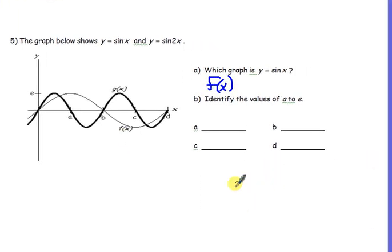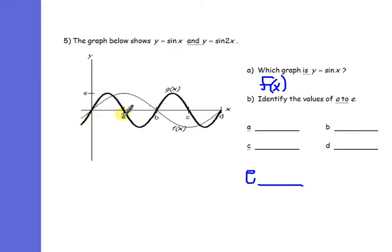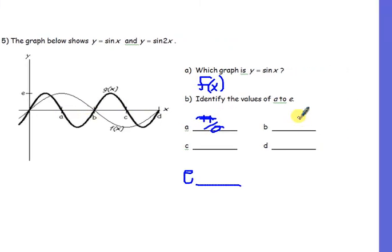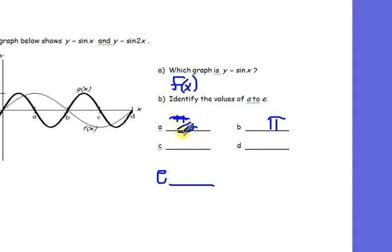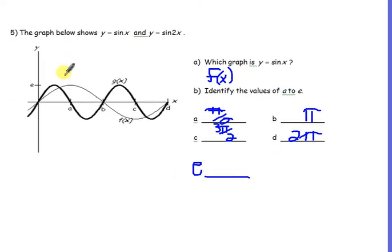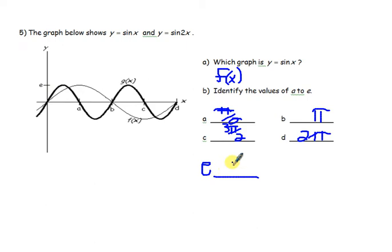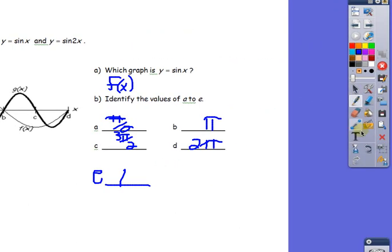I need to find out what a, b, c, d, and e are. Point a is going to be an interval point. If the period is 2π and you divide that by 4, each interval point is going to be π over 2 radians. So a is π over 2, b is π radians, c is 3π over 2 radians, and the last point on that interval is 2π. And e is the amplitude — if you look at the amplitude here, it's 1.